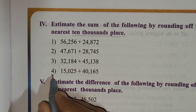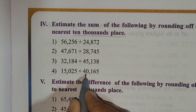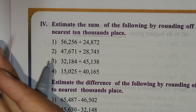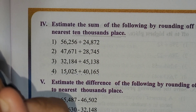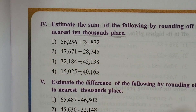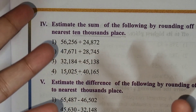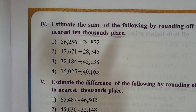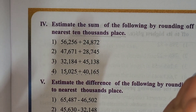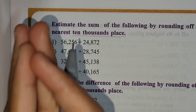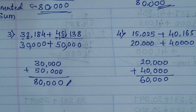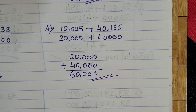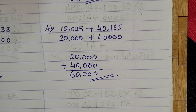Now let's take the fourth and last one: 15,025 plus 40,165. Just pause the video and try to solve it by yourself, then continue and check your answer with mine. If it is right — very good, well done! If it is wrong — no problem, try to solve it once again. The answer is sixty thousand. Hope you solved it properly and correctly — well done, children!